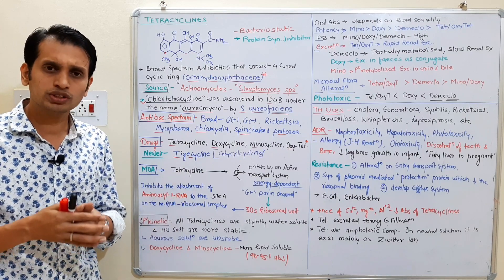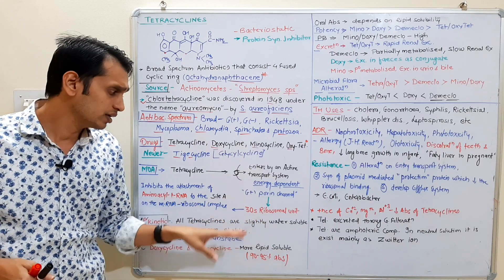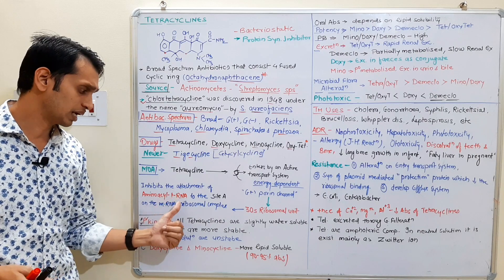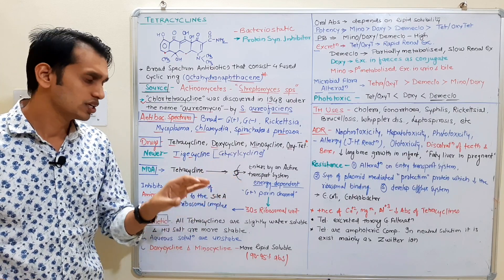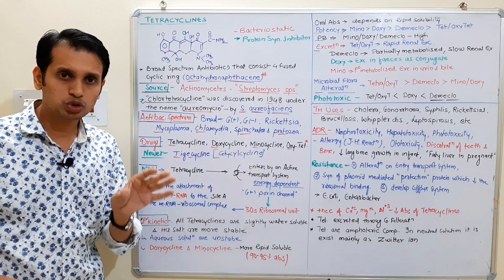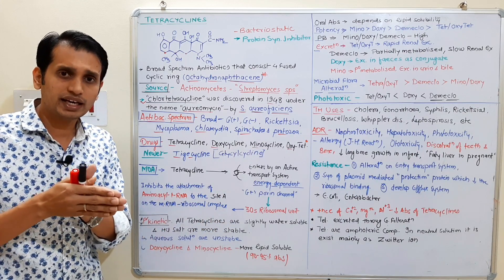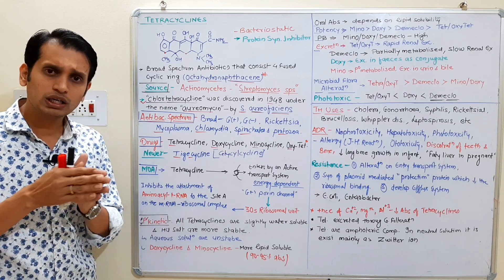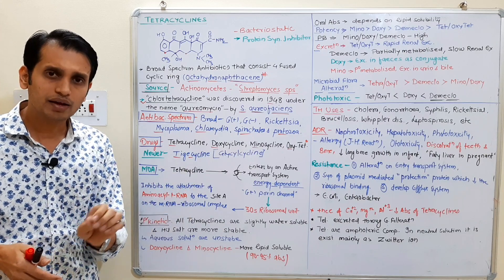Tetracycline does not damage the cell membrane. After entry of tetracycline within the cell, it binds with the 30S ribosomal unit and basically inhibits the attachment of aminoacyl-tRNA to the binding site A on the mRNA-ribosomal complex. In gram-negative bacteria, entry is through a protein channel. Tetracyclines inhibit protein synthesis by competing with tRNA for binding site A.